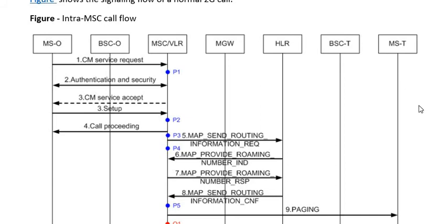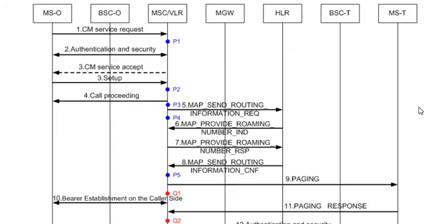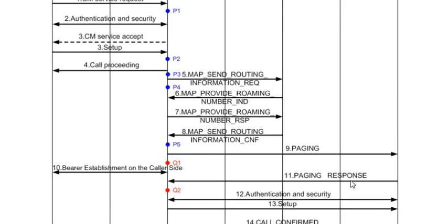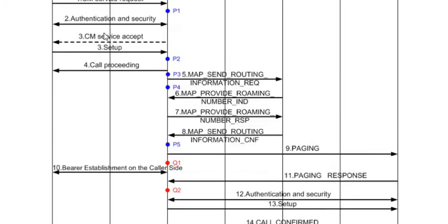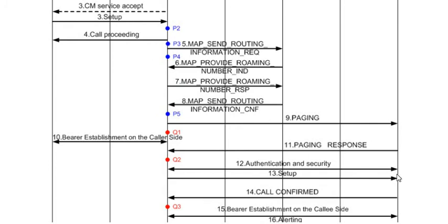The MSC then initiates a Paging Request message to the terminating mobile subscriber. The paging message is essentially a search message in which the called party is located on the network. Once the terminating MS responds with a Paging Response message, the MSC knows the called party has been located, and authentication and security procedures similar to the A party are initiated for the B party.